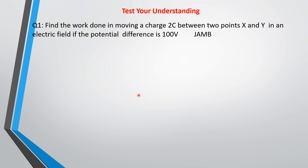Here is a review question: Find the work done in moving a charge of two coulombs between two points X and Y in an electric field where the potential difference is 100 volts. We said potential difference equals work done over quantity of charge, so work done equals potential difference times charge. With that you can solve the problem easily.